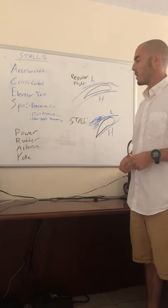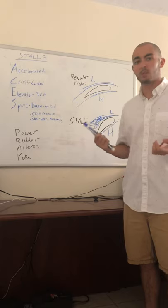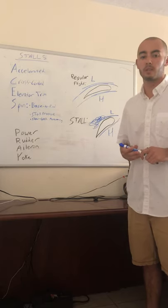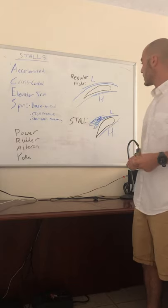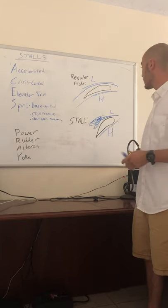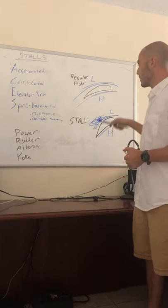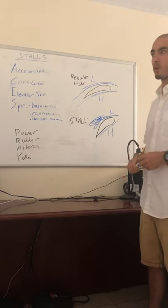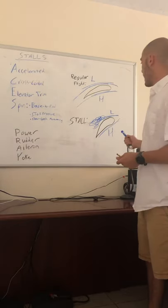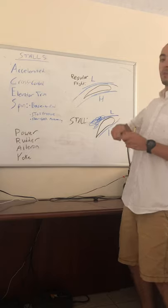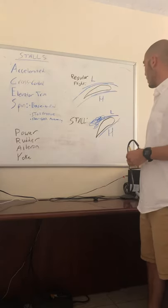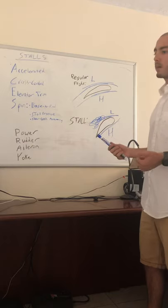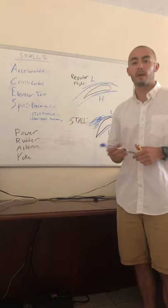We'll go ahead and touch on that as well, but first let's address what really is a stall in the first place. The stall, as shown here, is when we exceed our critical angle of attack and the airflow over the upper side of the airfoil is disrupted. At that point we have low pressure that's way to the front of our wing, and therefore we're not creating a sufficient amount of lift with the amount of drag we have.